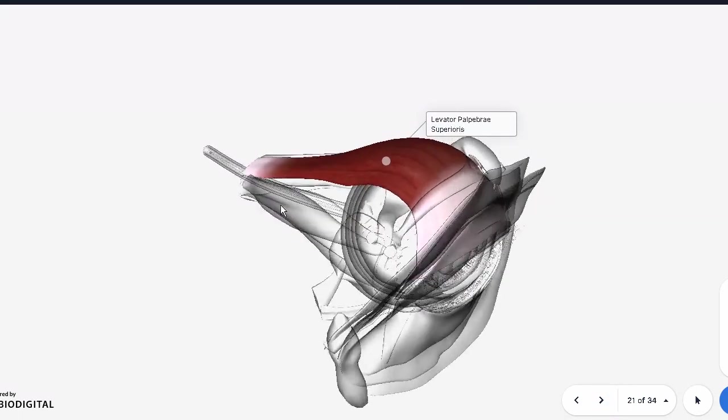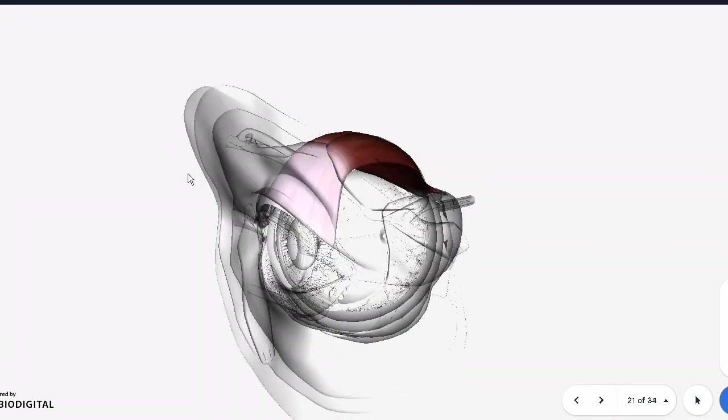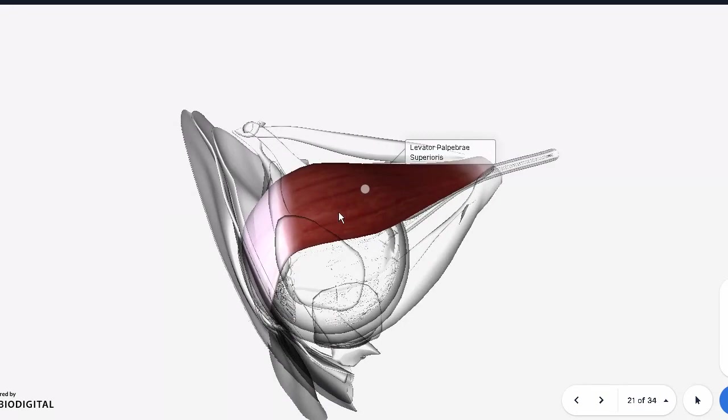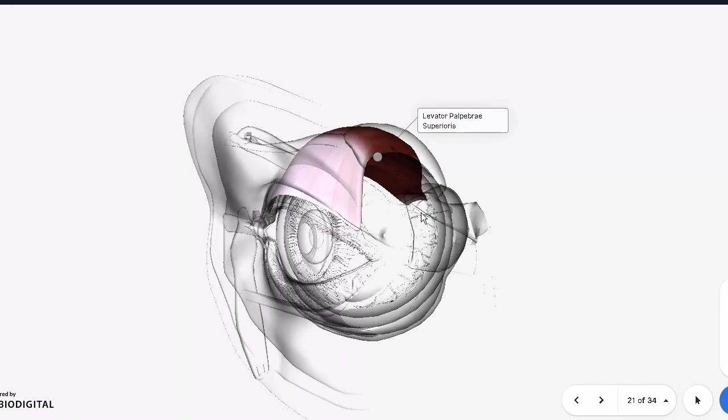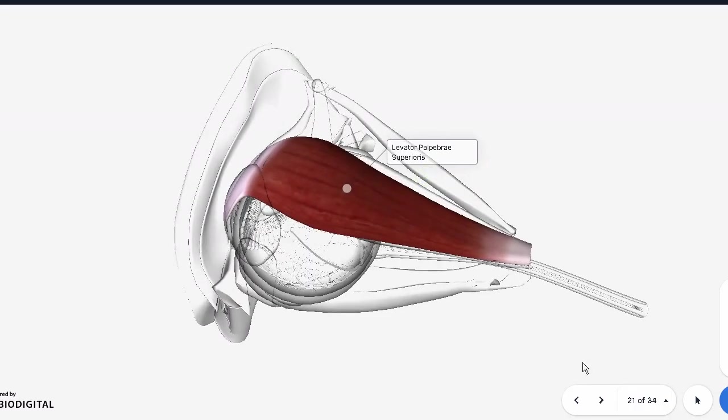Here is your levator palpebrae superioris. This is your blinking muscle. This is the one which pulls your upper lid. Remember, your lower lid is not really moving. It's your upper lid. And this muscle, which is supplied by the oculomotor nerve, pulls on the upper lid and closes it as well. You can see how it attaches directly into the upper lid, right from above.